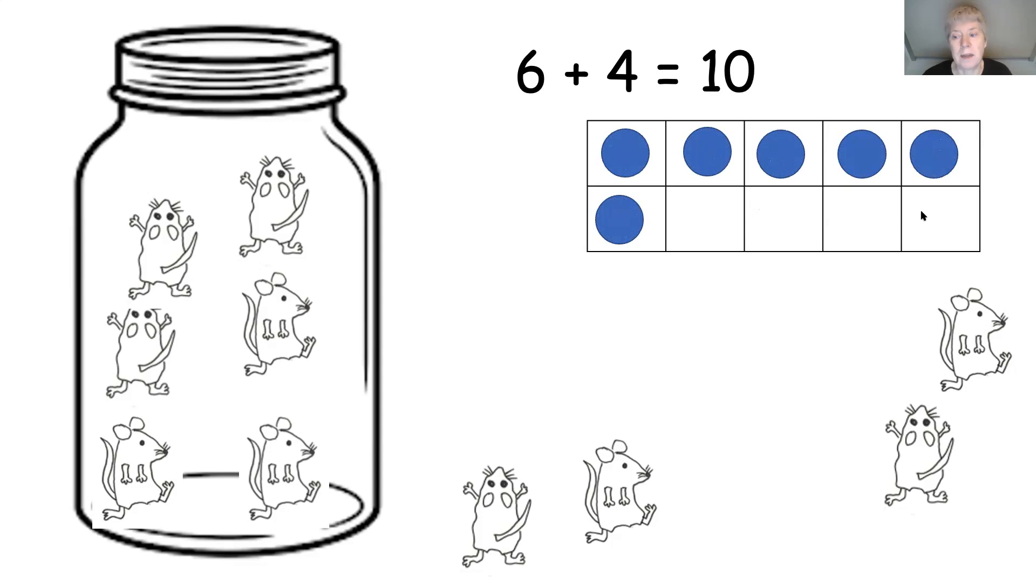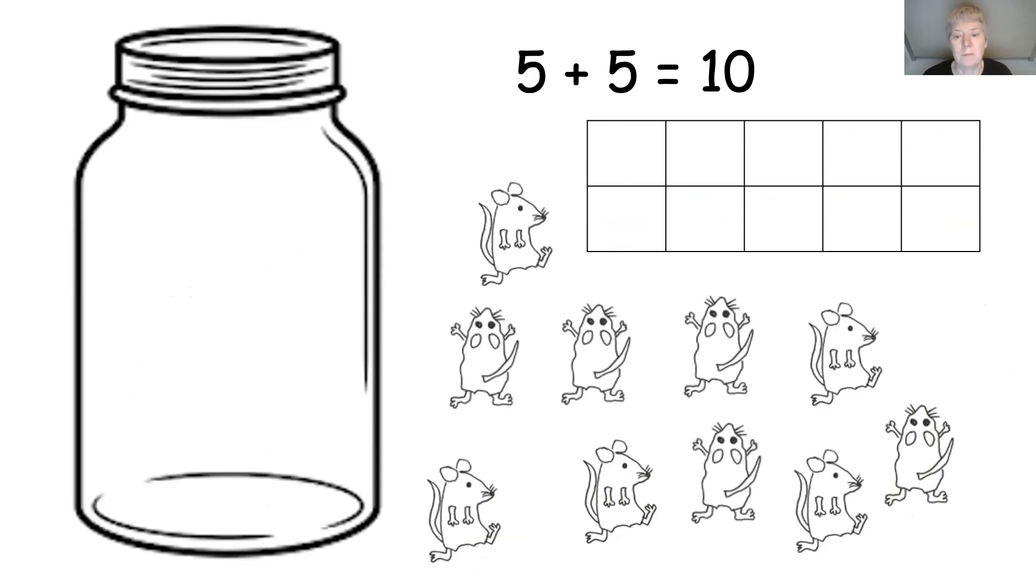That's right, there are four spaces and four mice. We've got six mice in the jar and four mice not in the jar. Let's add the four counters. So we can see six plus four makes ten.